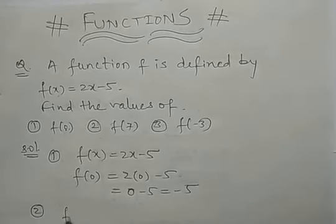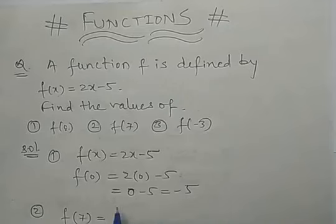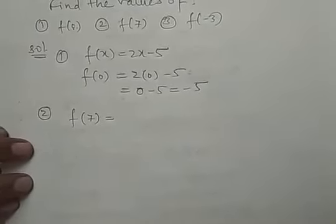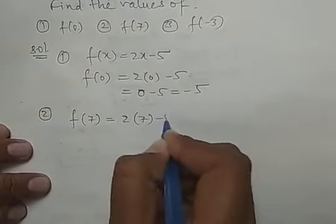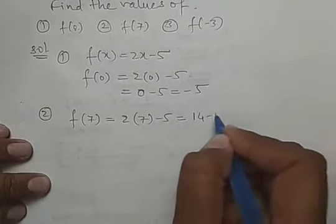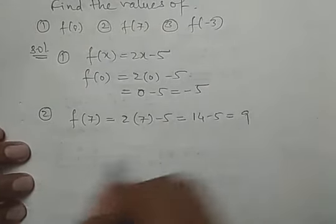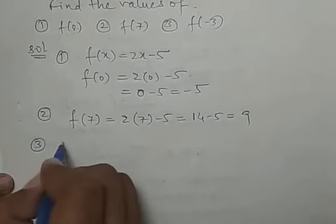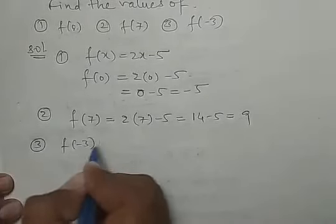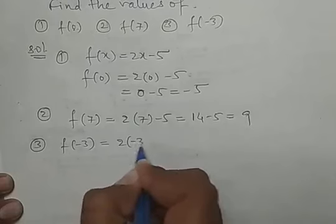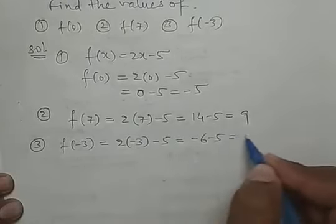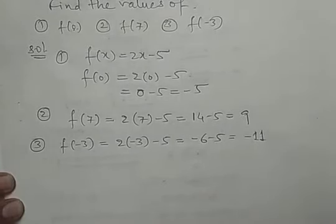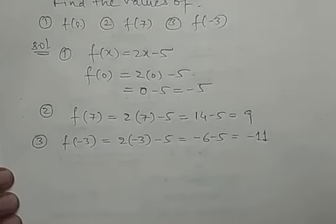اب second value f(7) نکالنی ہوگی۔ اسی function کے لئے f(7) = 2×7 - 5 = 14 - 5 = 9۔ اور third، f(-3) = 2×(-3) - 5 = -6 - 5 = -11۔ تو یہ آپ کی values ہو جائیں گی۔